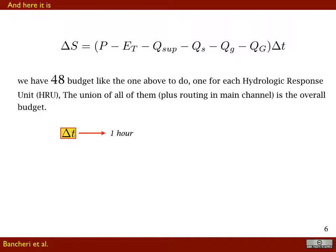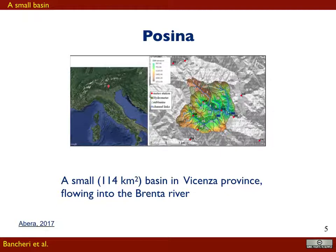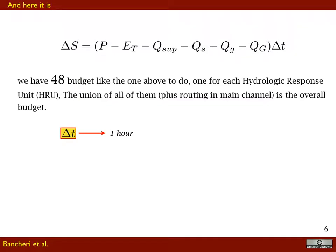The water budget can be written as shown here, and the thing we want to remark is that we are working for the Posina River at a sub-daily time scale. The Posina itself is divided into 14 sub-budgets, each one for each HRU (Hydrologic Response Unit). In each part the budget is estimated and eventually used to obtain the global budget at the catchment level.